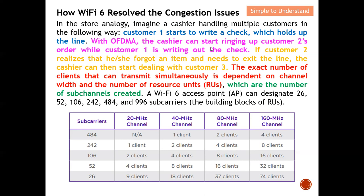Next, if customer two realizes he or she has also forgotten an item and needs to exit the line, the cashier can then start to deal with customer three. So customer one is writing a check, customer two has forgotten something and needs to exit the queue, and the cashier can then ring up to serve customer three. The exact number of clients that can be transmitted simultaneously depends on the channel width and the number of resources needed.